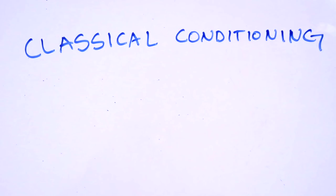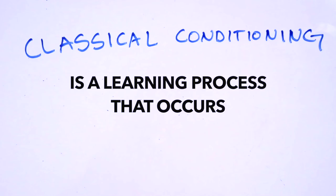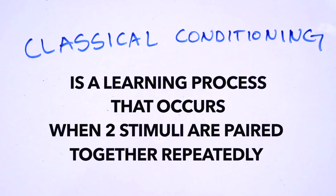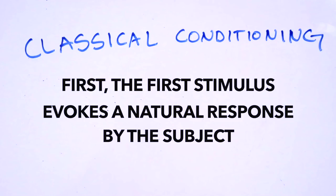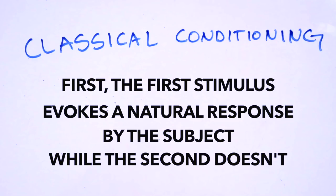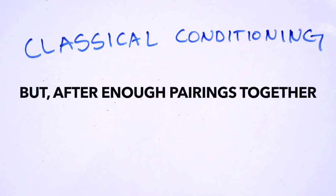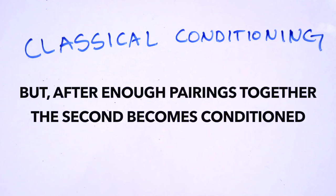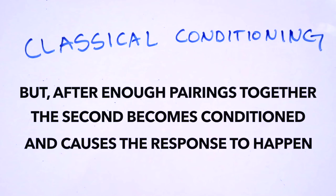Classical conditioning is a learning process that occurs when two stimuli are paired together repeatedly. The first stimulus evokes a natural response by the subject, while the second doesn't. But after enough pairings together, the second becomes conditioned and causes the response to happen.